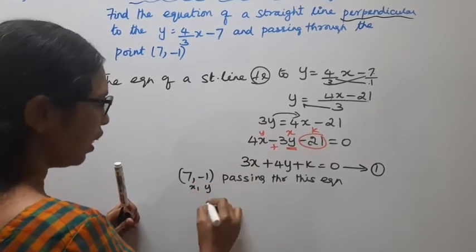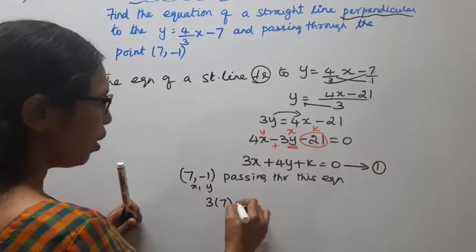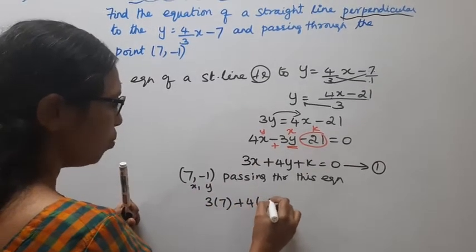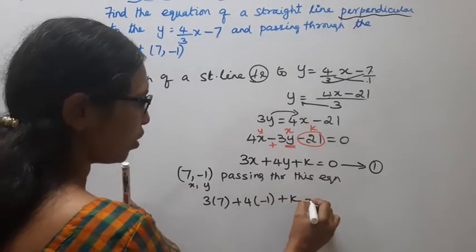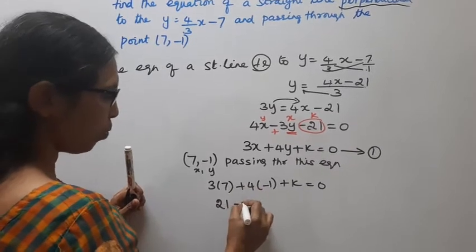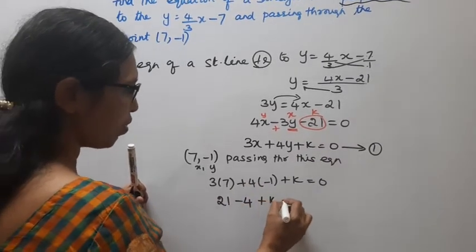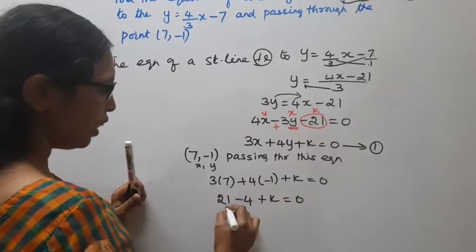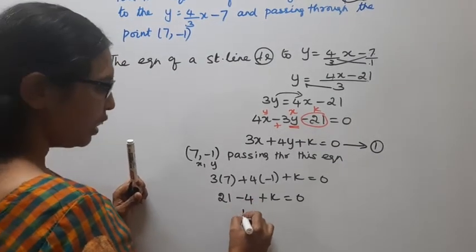The first equation, the seven comma minus one passing through this equation. 3 into 7 plus 4 into minus 1 plus k equal to 0. 3 times 7 is 21, 4 into minus 1 minus 4 plus k equal to 0.